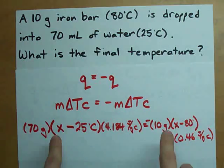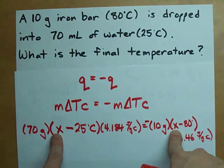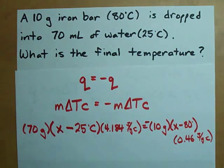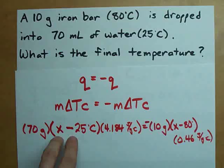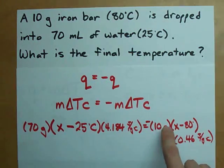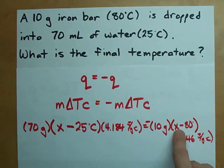Notice, X is going to be somewhere in between 25 and 80, because you're going to end up warmer than the water, but colder than the iron bar. Let's say 50. This is going to be 50 minus 25. That's 25. This is going to be 50 minus 80, which is negative 30.